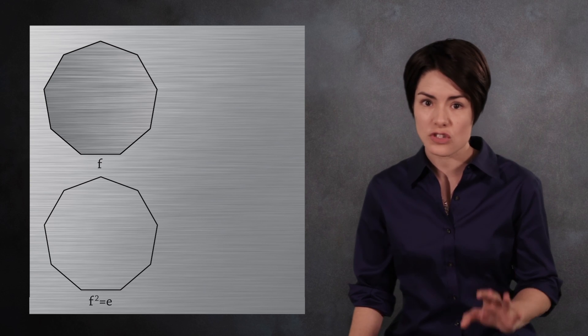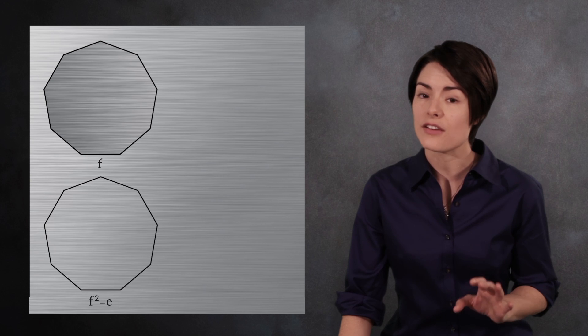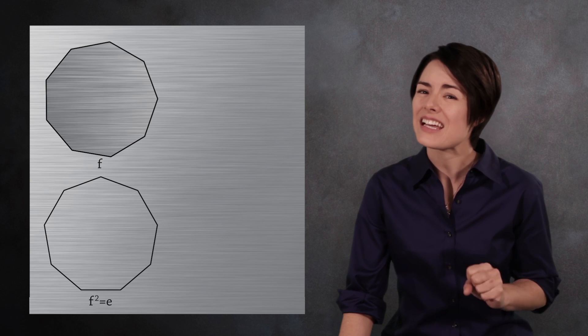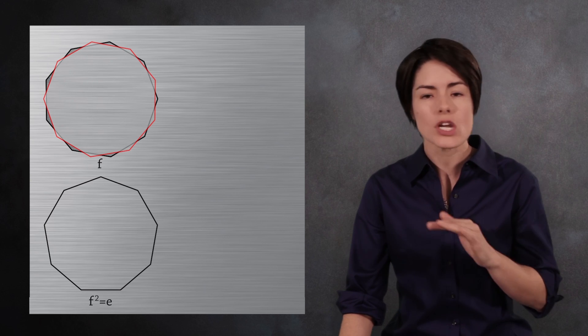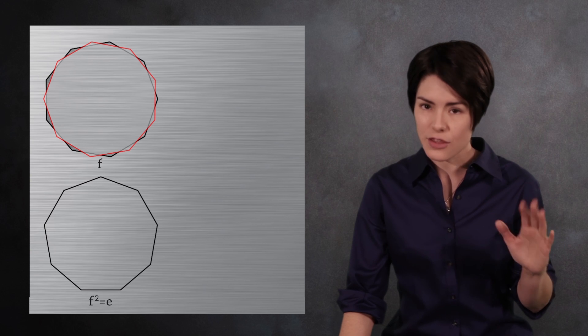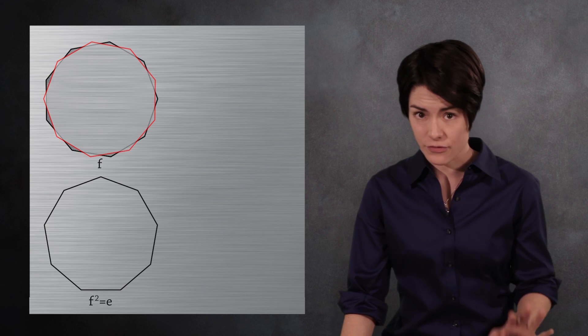By the way, this assumes that our polygon is aligned vertically. If the polygon is slightly tilted, then a flip about the vertical axis would not be a symmetry. The before and after are different.